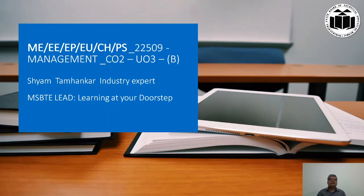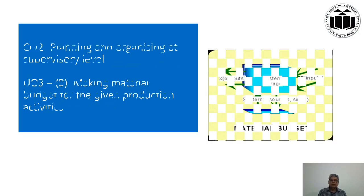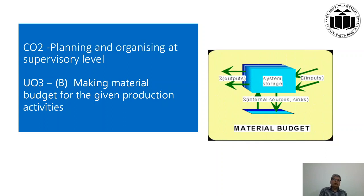Hello friends, I am Shan Tamankar. I welcome you to the audiovisual program of learning by MSBT, called MSBT LEAD — Learning at Your Doorsteps. We are going to deal with Course Outcome 2, Unit Outcome 3, Part B of the subject Management, code 22509. Unit Outcome 3 Part B deals with making a material budget for given production activities.